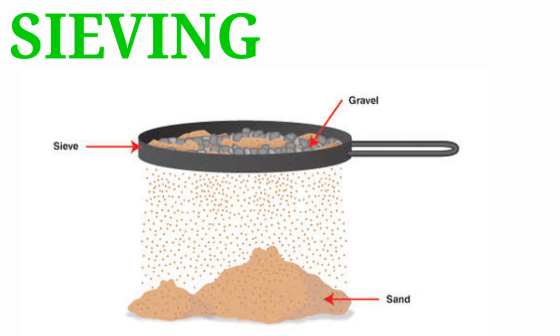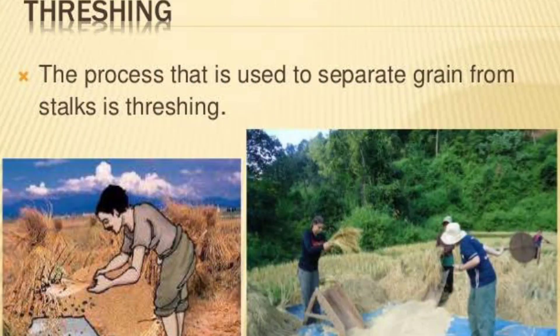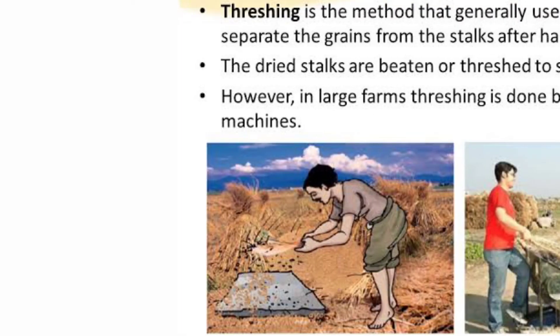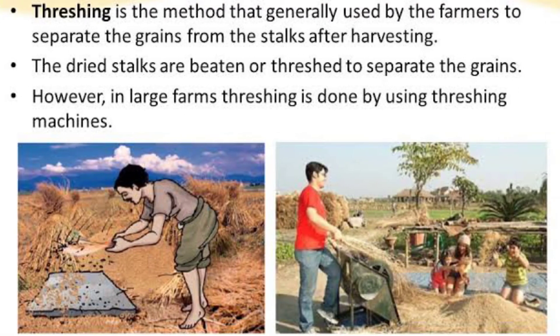Threshing is the process used to separate grain from stalks. This is done after harvesting; farmers dry the stalks and beat or thresh them to separate the grains. In large farm areas, it is done by using different kinds of threshing machines.